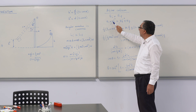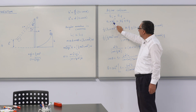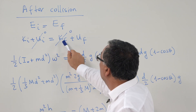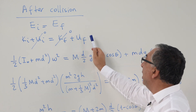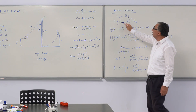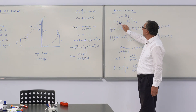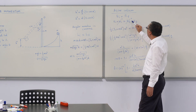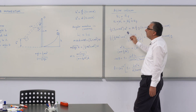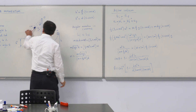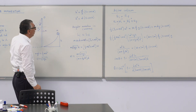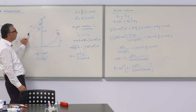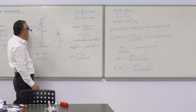After determining the angular velocity of the system, we apply conservation of energy for the swing phase. Initial kinetic energy plus initial potential energy equals final kinetic energy plus final potential energy. Initial potential energy is zero at the collision point, and final kinetic energy is zero because the system momentarily stops at the maximum angle.